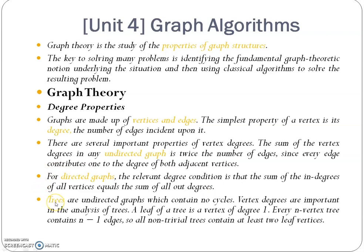If we find the degree for a tree — which is an undirected graph containing no cycle — the vertex degrees are important. For a tree with n vertices, it contains n minus 1 edges. A non-trivial tree contains at least 2 leaf vertices.